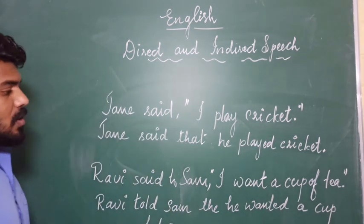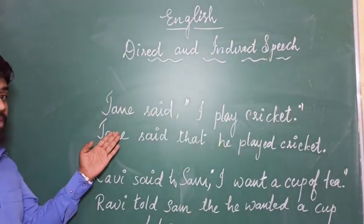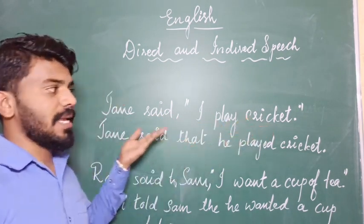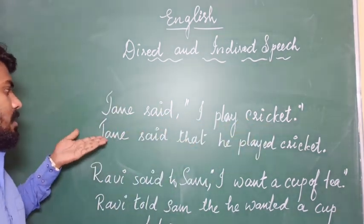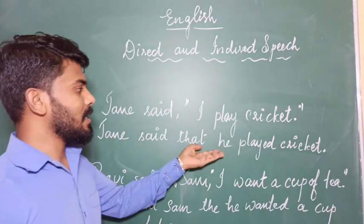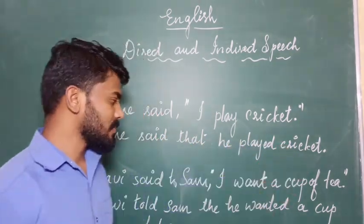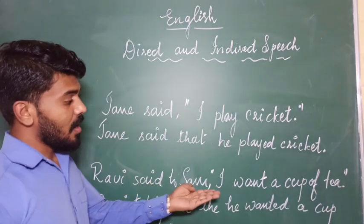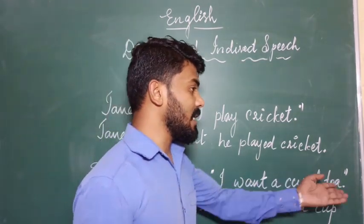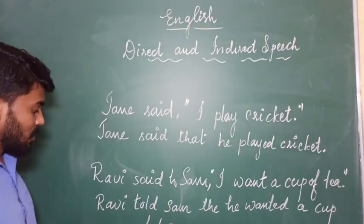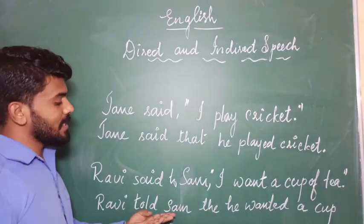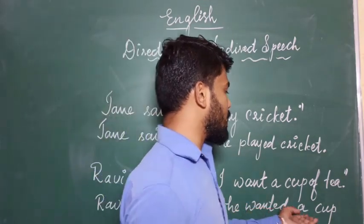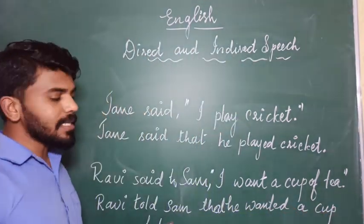The second sentence: Ravi said to Sam, 'I want a cup of tea,' has been converted into: Ravi told Sam that he wanted a cup of tea. You have seen the conversion of two sentences. Jane said, 'I play cricket,' has been converted to: Jane said that he played cricket. And Ravi said to Sam, 'I want a cup of tea,' has been converted to: Ravi told Sam that he wanted a cup of tea.